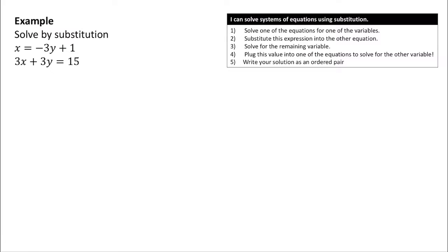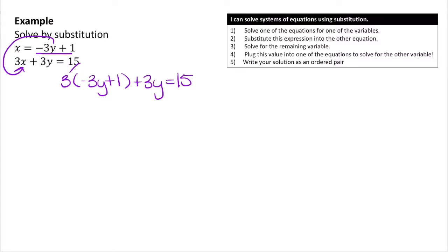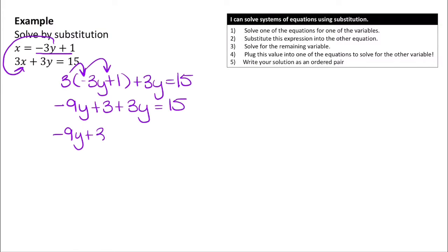Let's work through this example. The nice thing here is that step 1 is already taken care of, because the first equation is already solved for x. So we take that expression as the definition of x and plug it into the second equation, giving us 3 times (negative 3y plus 1) plus 3y equals 15. Using the distributive property, we multiply every term inside by 3, which gives us negative 9y plus 3 plus 3y equals 15.